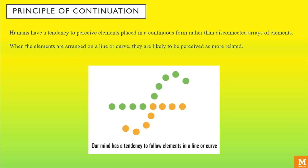Proceeding towards the principle of continuation. When elements are arranged on a line or a curve, they are likely to be perceived as more related. Our visual perception has a tendency to perceive elements placed in a continuous form rather than in a disconnected array. For example, in the figure below, the green dots in the curved line seem to be more related to the orange dots in the curved line than the green dots in the straight line. Hence, the ability of our eyes to naturally follow a curve or a line is stronger than identifying similarity of colour.